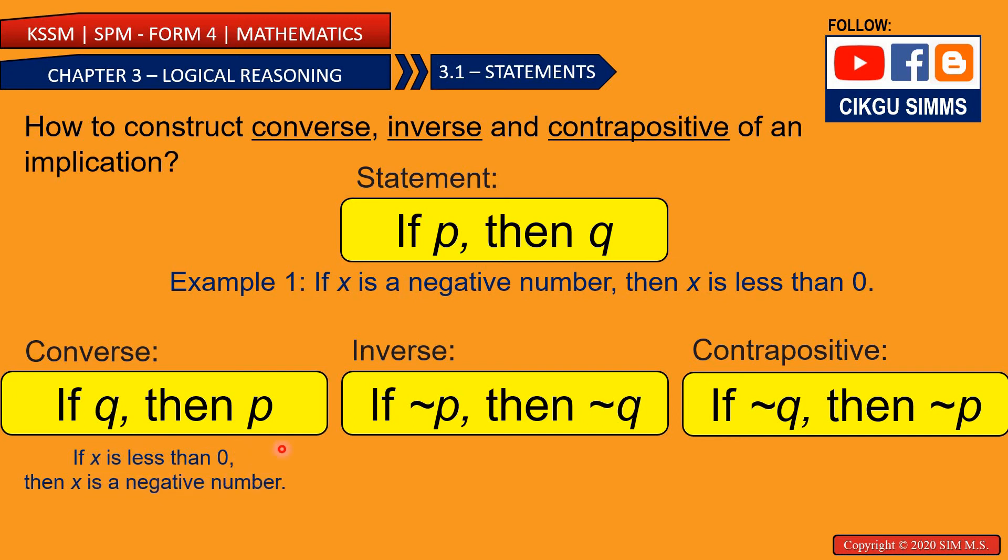For inverse you need to add a not to make it a tilde. So if x is not a negative number then x is not less than 0. You see the difference - you have a not here. You have already negated the P and negated the Q by using the word not.